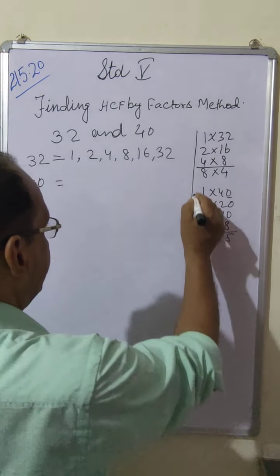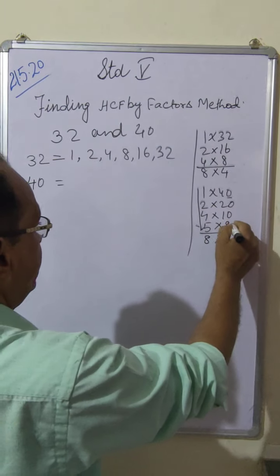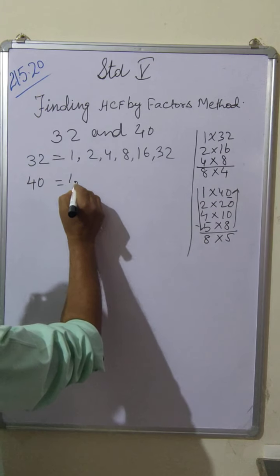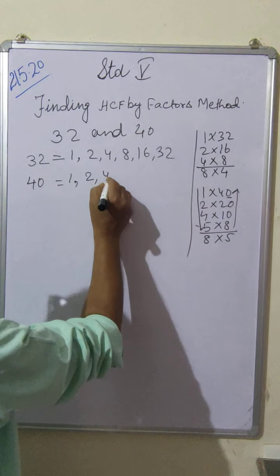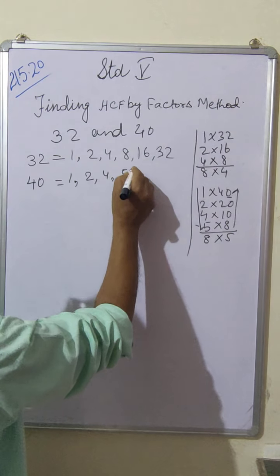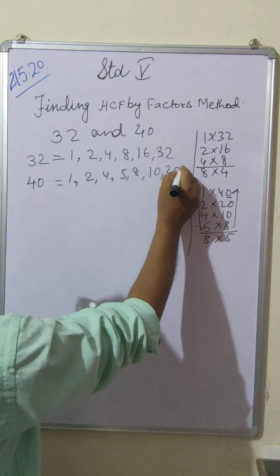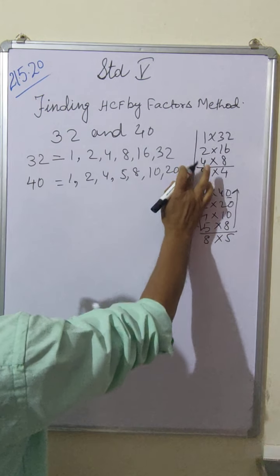Now all the factors: 1, 2, 4, 5, 8, 10, 20, 40.